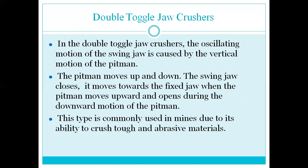In the double toggle jaw crusher, the oscillating motion of the swing jaw is caused by the vertical motion of the pitman. The swing jaw closes — moving towards the fixed jaw — when the pitman moves upward, and opens during the downward motion of the pitman.